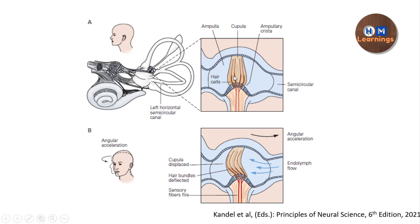When there is motion, the relative motion between the endolymph and the cupula causes the bending of the cupula, which transfers mechanical energy to the hair bundles and the stereocilia. There will be bending of the stereocilia with the bending of the cupula, opening up their channels, and hence there is a change in the membrane potential of the hair cells. We are going to see in the upcoming slides how this happens.